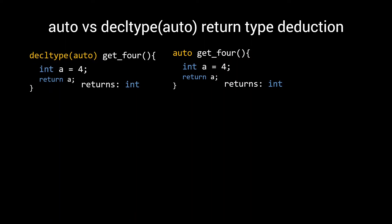However, if we were to slightly modify our function by adding some parentheses around the return, thereby turning it into an lvalue expression, now suddenly a different rule applies for the decltype deduction, and we are returning a reference to a local variable, which could lead to all kinds of undefined behavior. As such, when deciding whether to use auto or decltype auto for your return type, I like to stick to a simple rule of thumb.